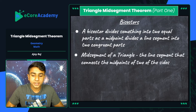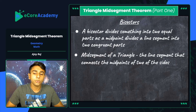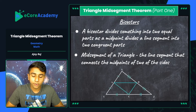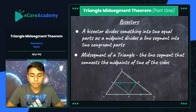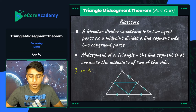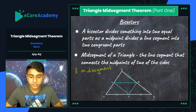Let's look at the mid-segment of a triangle — what exactly it is and how we can formulate our mid-segment theorem. The mid-segment of a triangle is the line segment that connects the midpoints of two of the sides. Looking at a diagram, there are three possible mid-segments for any triangle, because there are three sides of a triangle.